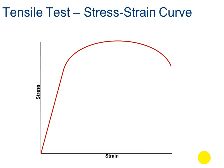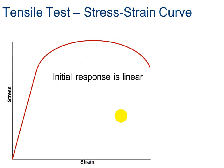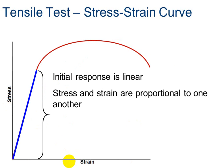This is what your stress versus strain graph looks like. There are some really important features. If you'll notice, it appears to be linear for a while before it takes off and does a little curvy thing — it goes up and then comes back down. My initial response is linear, meaning as stress goes up, so does strain. Stress and strain are proportional to one another — as one goes up, the other goes up. This is called the elastic range.